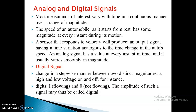Analog varies with time in a continuous manner over a range of magnitude. An example is automobile devices — the speedometer starts from zero and goes up; it consists of a pointer that varies continuously. In digital, there are only two things: either on/off or low to high. Low means the signal is zero, high means the signal is one — only two distinct magnitudes are measurable in a digital signal.